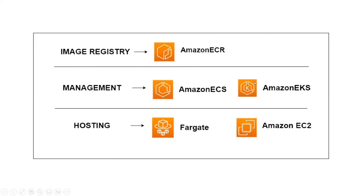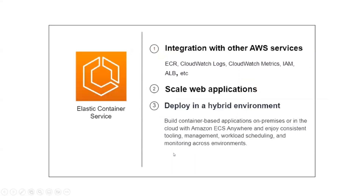For container management we have orchestration tools like Amazon ECS as well as Amazon EKS, where Amazon EKS works with Kubernetes. For hosting we have Fargate as well as Amazon EC2. These orchestration tools can use either Fargate or Amazon EC2 as their hosting options.